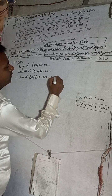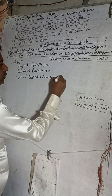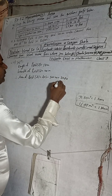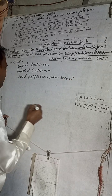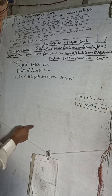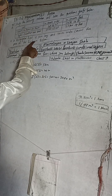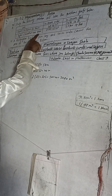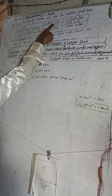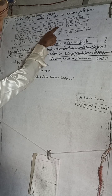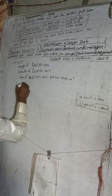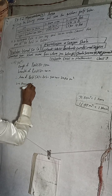The area is 50 into 40, which equals 2000 square meters. Now, looking at the conversion table, one ropni is equal to 508.72 square meters.